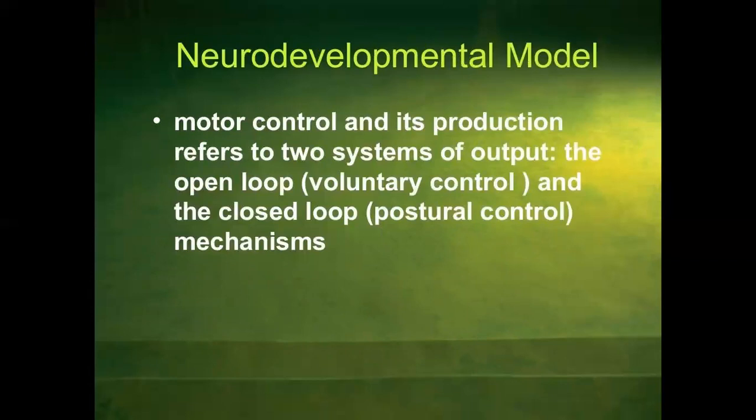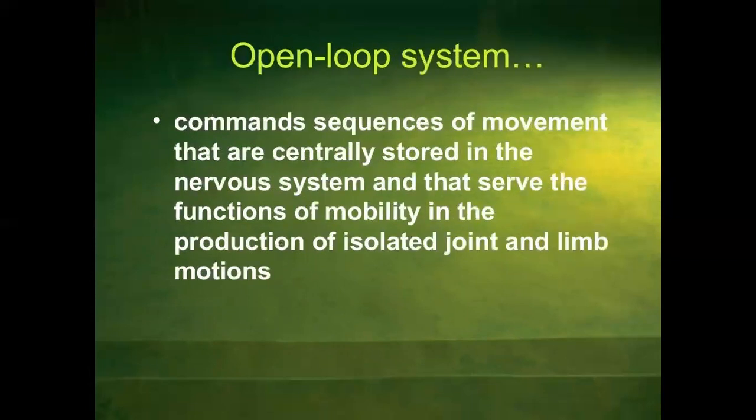The NDT model — the neurodevelopmental model consists of motor control and its production, and refers to two systems of output: the open loop, which is voluntary control, and the closed loop, which is postural control mechanisms. The open loop system commands sequences of movement that are centrally stored in the nervous system and serve the function of mobility and the production of isolated joint and limb motion.